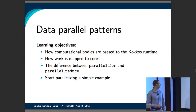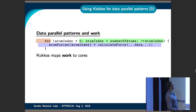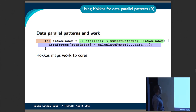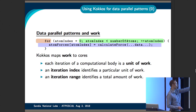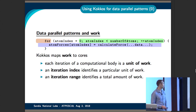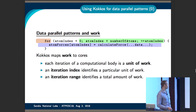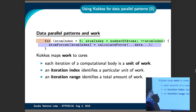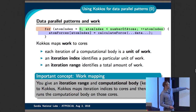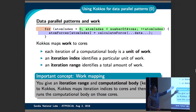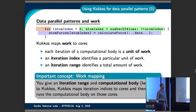Let's jump into how to use Kokkos for parallel patterns. Consider a snippet from an MD code where we're looping over some number of atoms, doing some calculation, and storing the result. With Kokkos, when we put this through a parallel_for, Kokkos maps work to cores, where a unit of work is one iteration of the computational body. The iteration index — here, the atom index — identifies a particular unit of work. The iteration range — the number of atoms — identifies the total amount of work. You provide the iteration range and a computational body to Kokkos, and it maps the iteration indices to cores and runs the computational body on those cores.